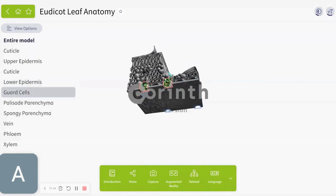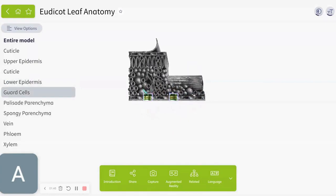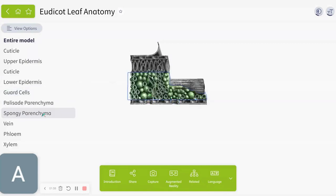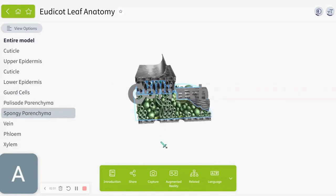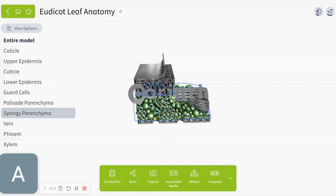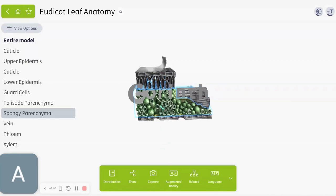There's another set of cells down here called guard cells which guard the entrance to the leaf, the only entrance to the leaf. The stomata, these holes are called stomata. You can see holes right here, small little tiny holes.